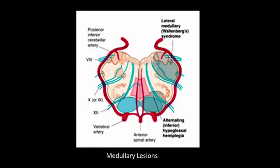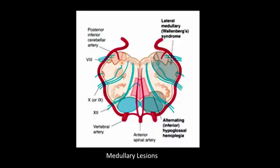Let's start from the medulla and then go up. In the medulla you can have medial medullary syndrome. In the midline, based upon the rule of four, we have the corticospinal tract, the medial lemniscus, and the 12th nerve nucleus. If there is a lesion in the center, you will have contralateral weakness because the corticospinal tract has not crossed over yet.